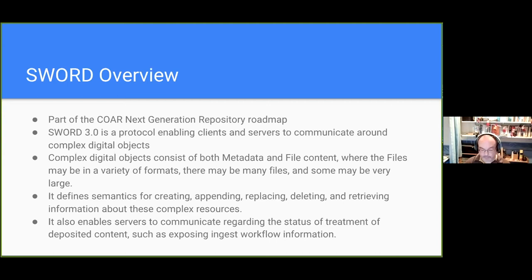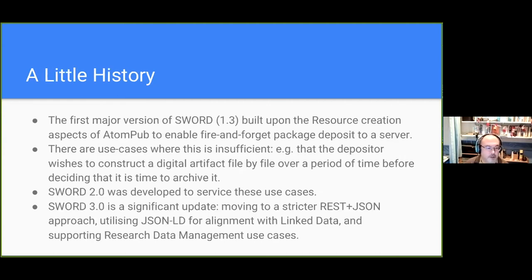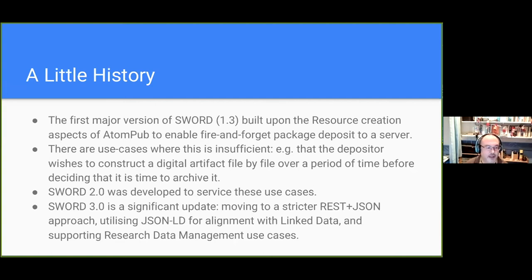It enables servers to communicate with each other about the status of particular content — whether it's been processed, whether it's been completely deposited or saved. A little history: version 1.3, about 12 to 13 years ago, was built on the resource creation aspects of a protocol called AtomPub. The idea was fire-and-forget — you fired up a SWORD session, injected your package and its metadata into the server, and that was your job done. Over the next five years it became evident this was insufficient. Sometimes you wanted to construct a digital artifact file by file over time or update metadata, so SWORD 2 was developed to service these use cases.